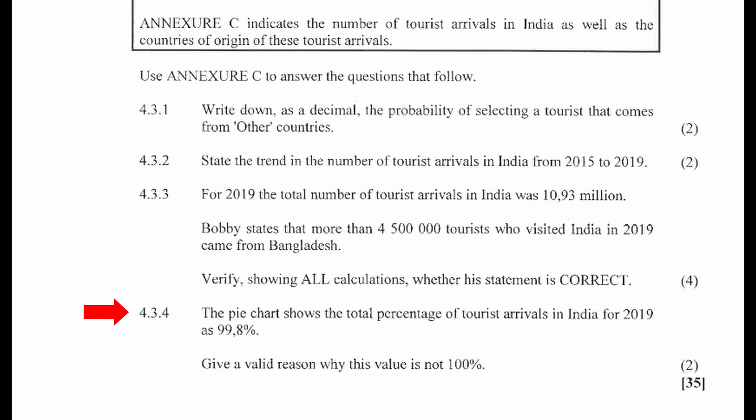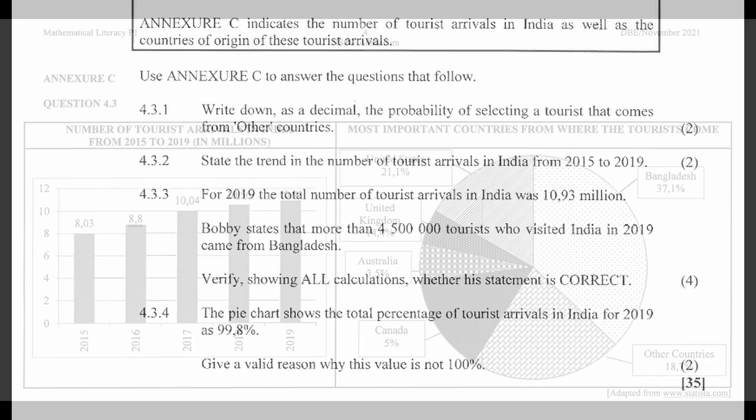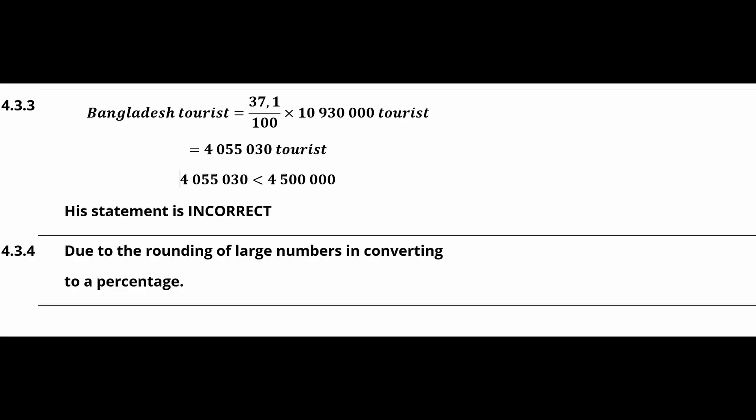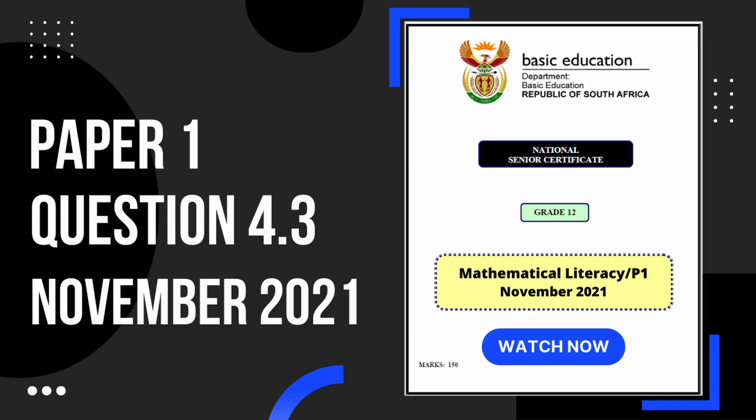4.3.4: The pie chart shows that the total percentage of tourist arrivals in India for 2019 is 99.8%. Give a valid reason why this value is not 100%. The reason is that this is due to the rounding of large numbers when converting to a percentage. And that's going to be it for question 4.3.